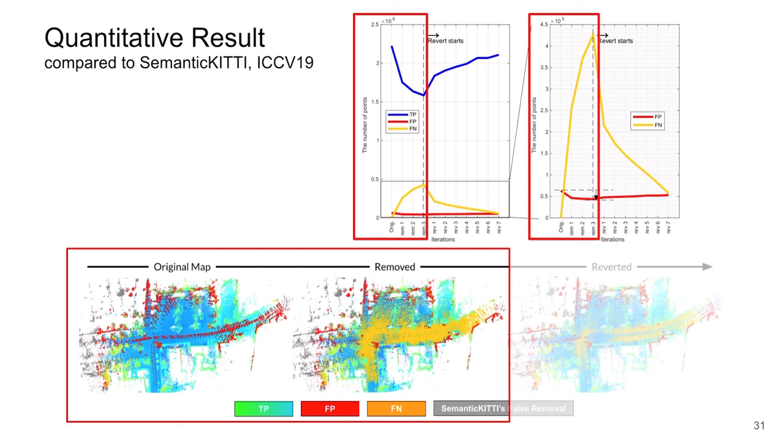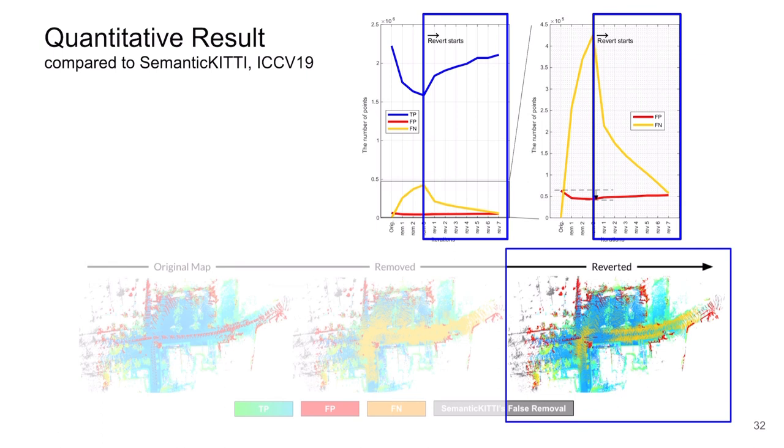At the first removing steps, as marked as red boxes, we can see the dynamic points floating on the main road are well removed. But also, the number of false negative points are simultaneously increased, which means falsely marked as dynamic. This kind of false estimation is mostly on the ground or ambiguous registration regions. But the aforementioned false predictions are well recovered through the revert, while very few dynamic points are falsely reverted.